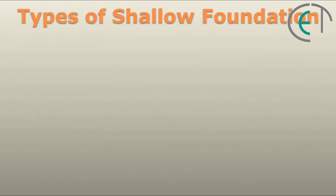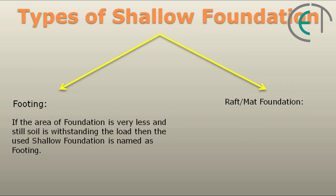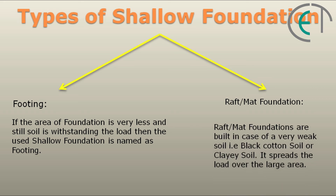Now let's talk about the types of shallow foundation. Mainly there are two types of foundation having shallow depth: footings and raft or mat foundation. If the area of foundation is very less and still soil is withstanding the load, then the shallow foundation used is named as footing. Raft or mat foundations are built in case of very weak soil such as black cotton soil or clayey soil, and it spreads the load over a large area.